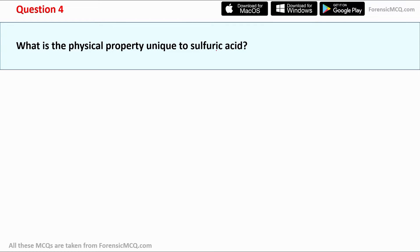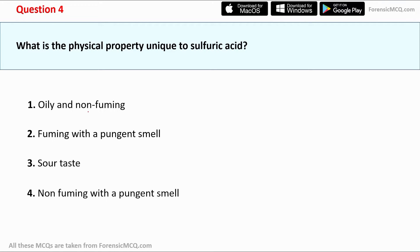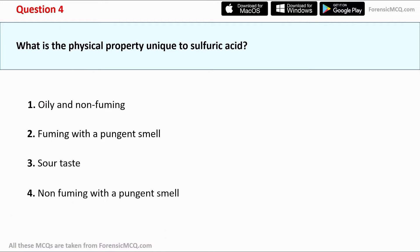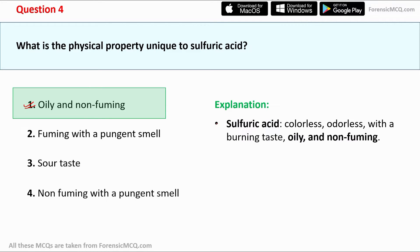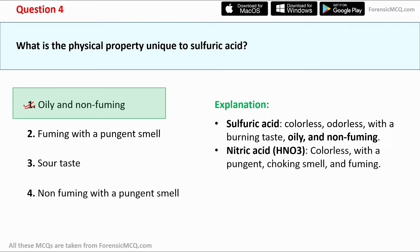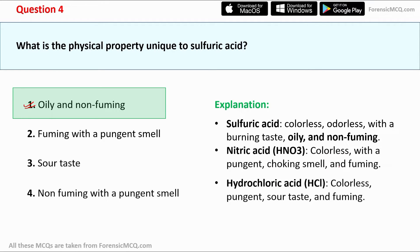Question 4: What is the physical property unique to sulfuric acid? The options are: oily and non-fuming; fuming with pungent smell; sour taste; and non-fuming with pungent smell. The correct answer is option 1 — oily and non-fuming. Sulfuric acid is colorless, viscous, with a burning taste, and is oily and non-fuming. Nitric acid is colorless with a pungent choking smell and is fuming. Hydrochloric acid is colorless with a pungent sour taste and is also fuming.